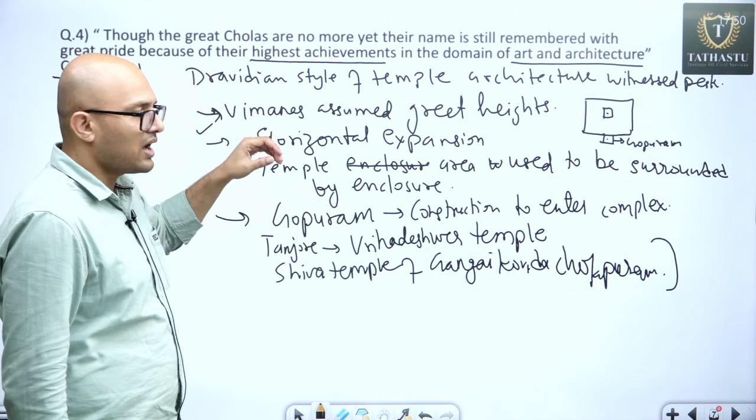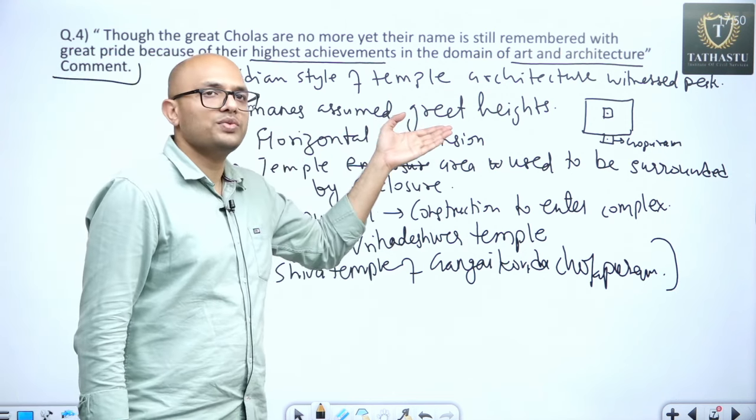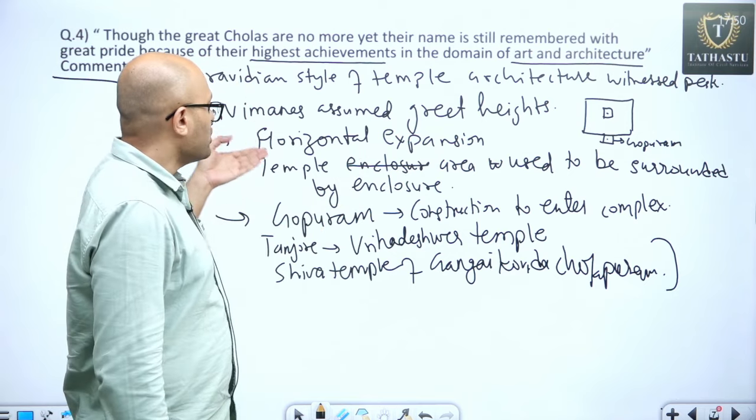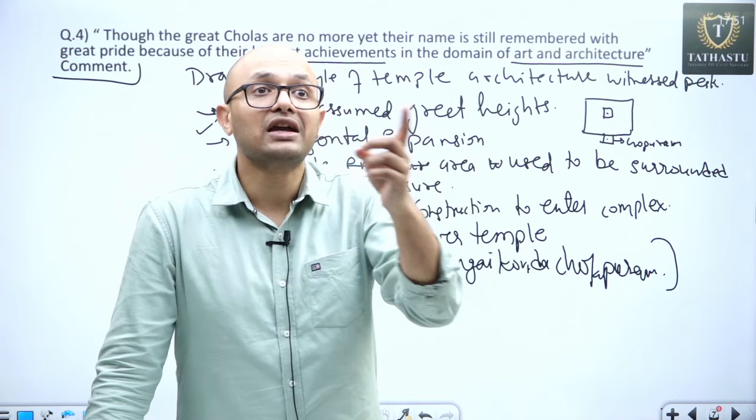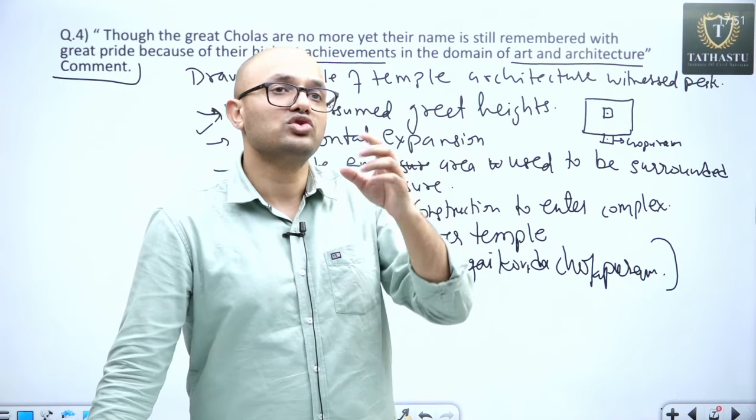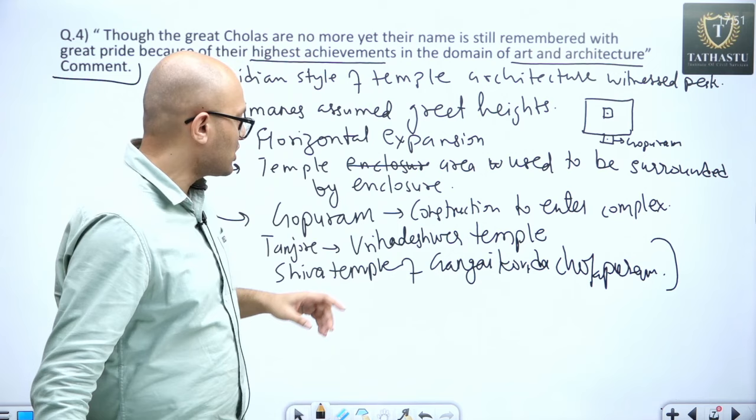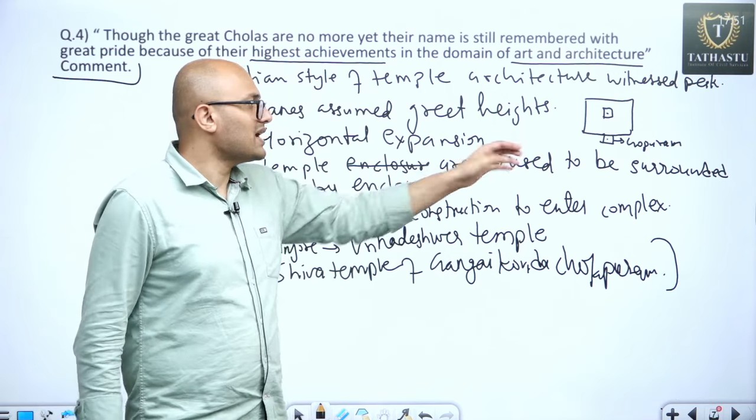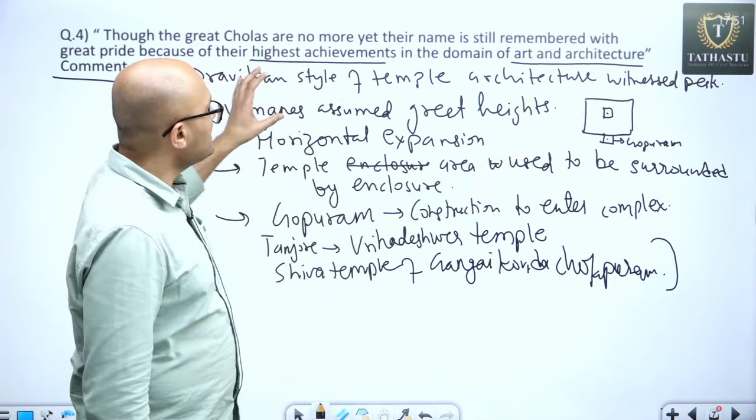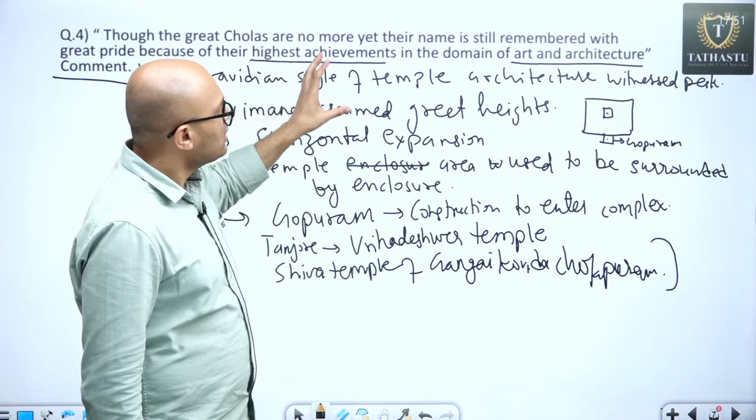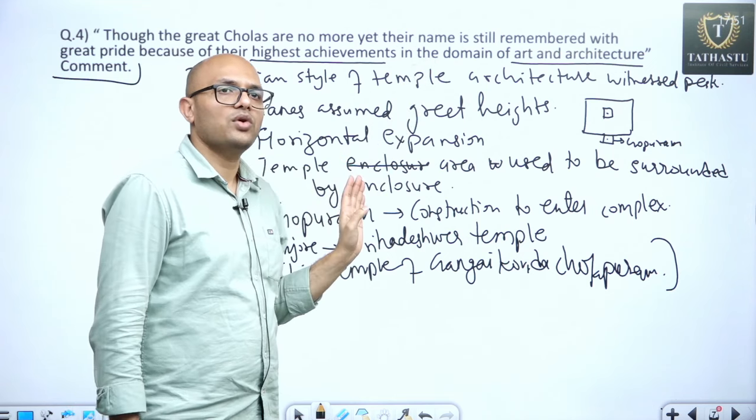What were the main features? Earlier Dravida temple architecture, Vimana started assuming great heights, horizontal expansion was witnessed, the temple complex used to be enclosed. Now, enclosures, now enclosures used to be constructed, now if you want to enter there will be one more construction that is Gopuram they started to build, Gopuram it was new, it was never done before, so new. So, all these elements led to new heights of art and architecture during the time of Cholas.